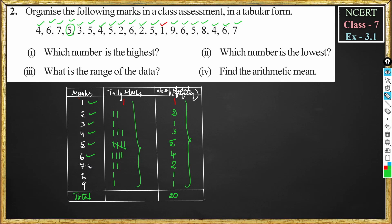4 students got 6 marks, 2 students got 7 marks, 1 student got 8 marks, and 1 student got 9 marks. Like this we make a table.